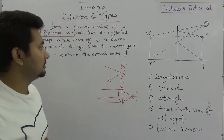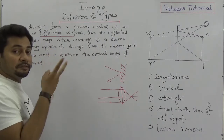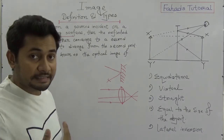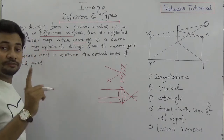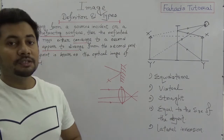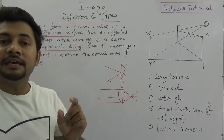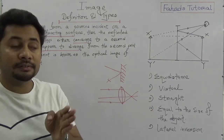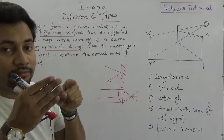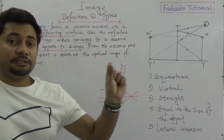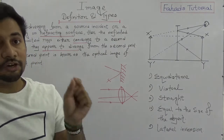We need to consider both surfaces. Then the reflected or refracted rays will either converge to a second point, or they appear to diverge from the second point. That second point is the optical image of the first point.